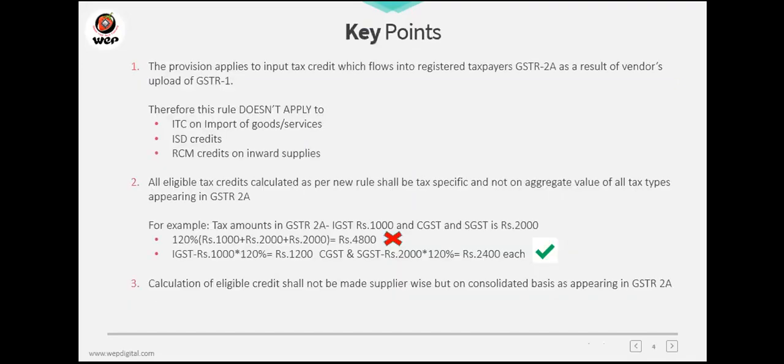Now the key points. ITC can be taken for records which appear in GSTR 2A — that is, invoices uploaded by your vendor or supplier as part of their GSTR 1. This rule does not apply to ITC on imports of goods or services, ISD credit, RCM credits, or reverse charge supply.